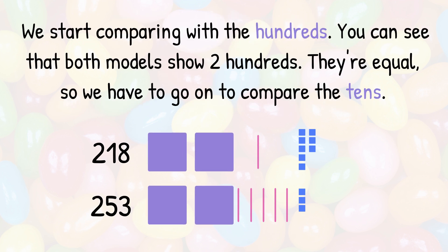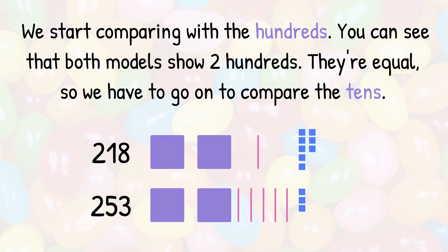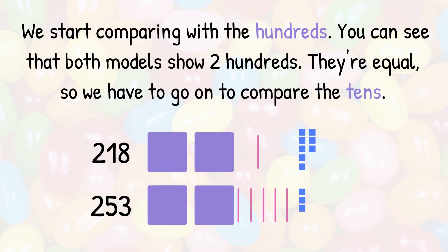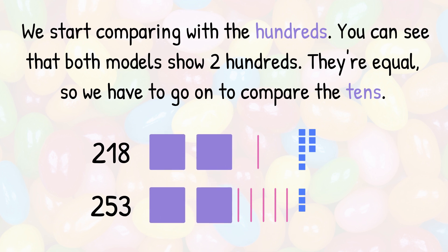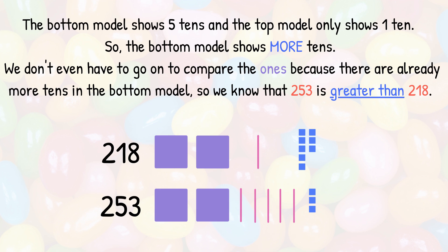We start comparing with the hundreds. You can see that both models show 2 hundreds. They're equal, so we have to go on to compare the tens. The bottom model shows five tens, and the top model only shows one ten, so the bottom model shows more tens. We don't even have to compare the ones because there are already more tens in the bottom model. So we know that 253 is greater than 218.